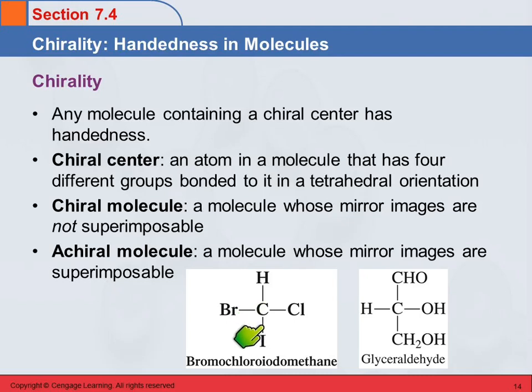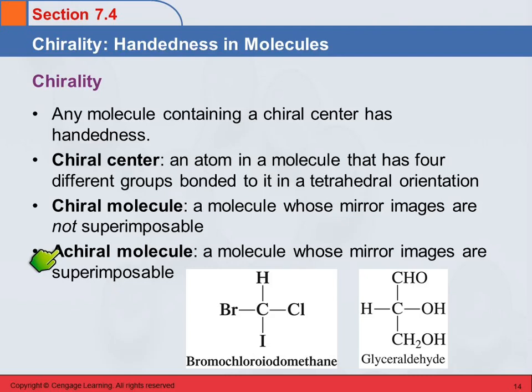Carbon makes four single bonds, and the four single bonds, if you remember VSEPR theory from general chem, make a tetrahedral shape. So when we have a molecule where carbon has four different things bonded to it, the mirror image will not be superimposable, and so we say this is a chiral molecule. An achiral molecule is a molecule without chirality — 'a' meaning not. An achiral molecule will have a mirror image that is superimposable; in other words, the mirror image is the same as the original.